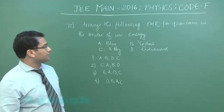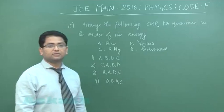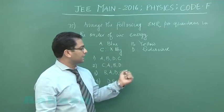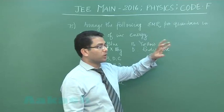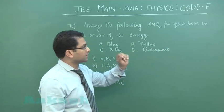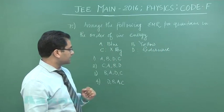Question number 75 is a simple factual question which says arrange the following electromagnetic radiation per quantum, that means for one given quantum, in the order of increasing energy.